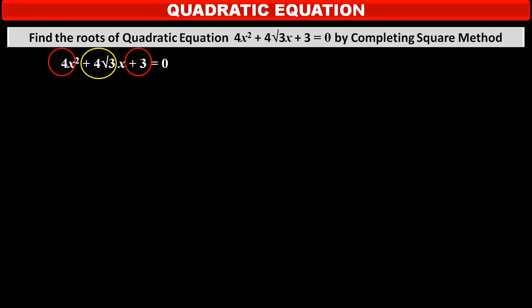To solve this equation by completing the square method, we have to transfer the constant term +3 to the right-hand side, which will become −3. So the equation becomes 4x² + 4√3x = −3.